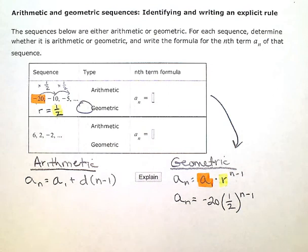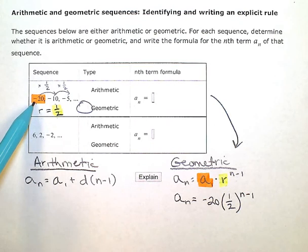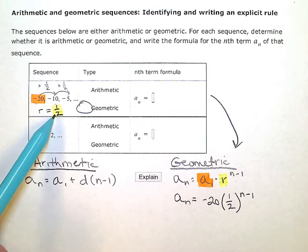For the next one, a very similar process. First, I need to decide if it's arithmetic or geometric. I need the same two pieces of information. I need the start value, which I already have—it's 6. But then if this one is also geometric, I need to know the common ratio. If it's arithmetic, it will be the common difference.